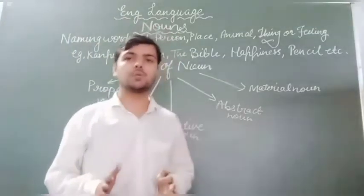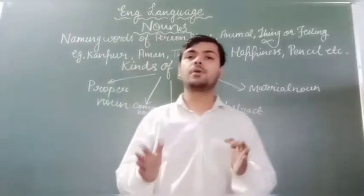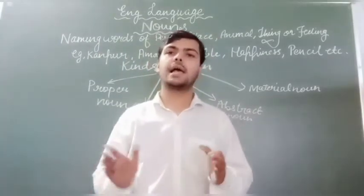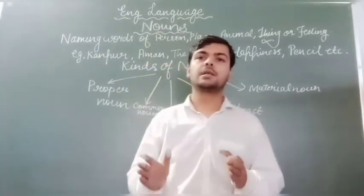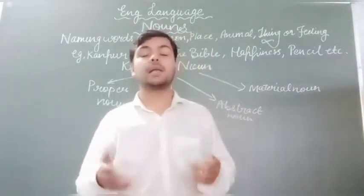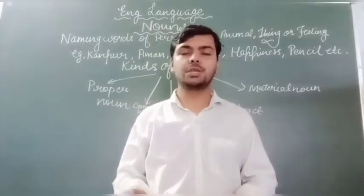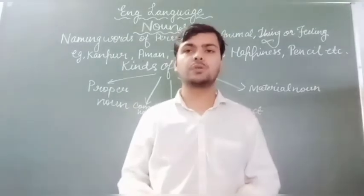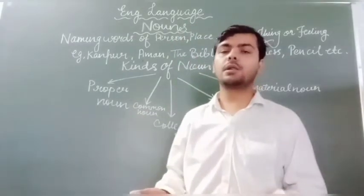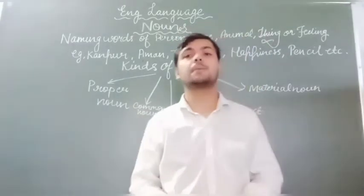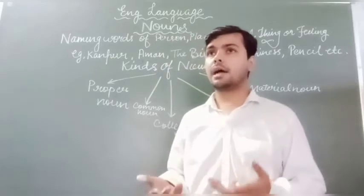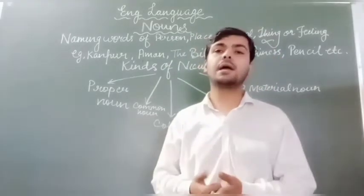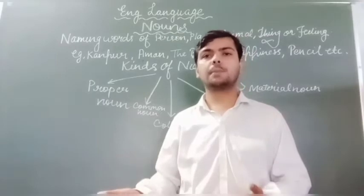अब हम kinds of noun में पहले Proper Noun की बात करते हैं। Proper Noun shows the proper names of particular person, animal, thing और place। जैसे persons की बात करें तो Lord Krishna, Mahatma Gandhi, Subhas Chandra Bose, Rahul, Mr. Gupta — यह सब persons की names हैं।